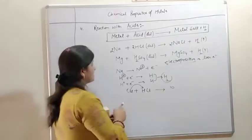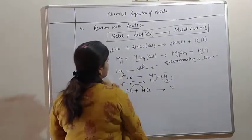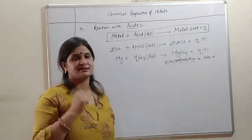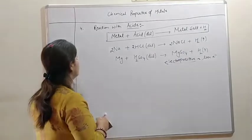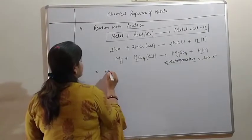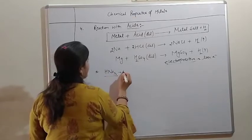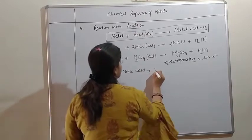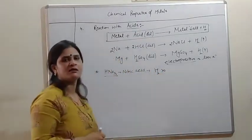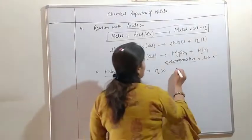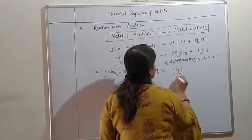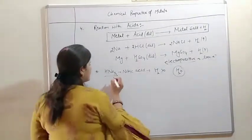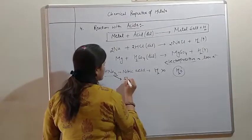If you react metals with nitric acid HNO3, hydrogen gas is not released. Instead, water is formed. The reaction is similar, but why? Because nitric acid is a strong oxidizing agent.